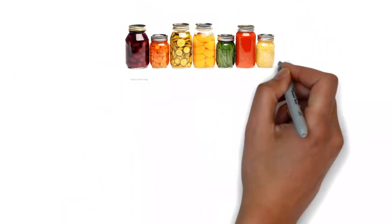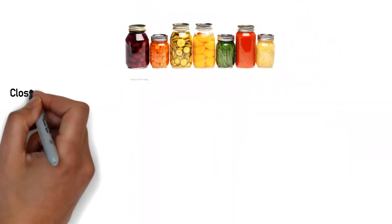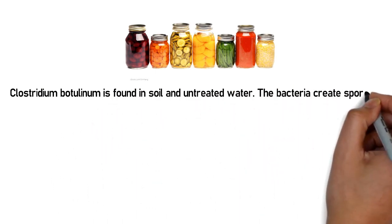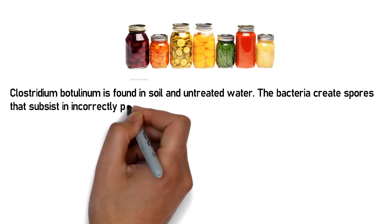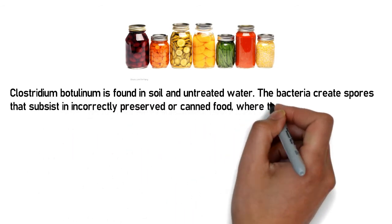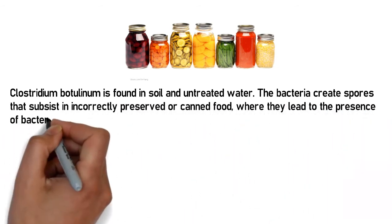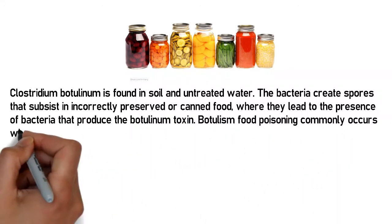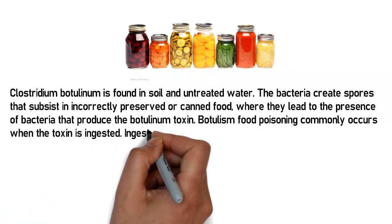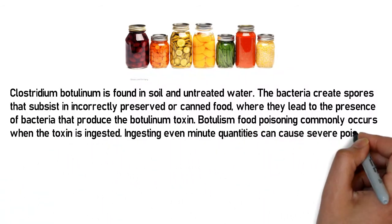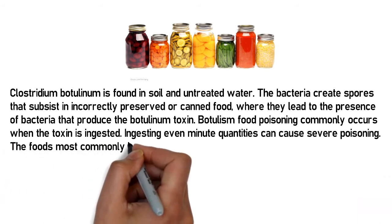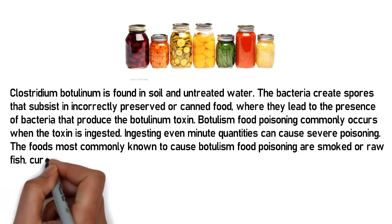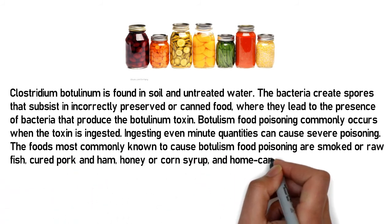What causes botulism food poisoning? Clostridium botulinum is found in soil and untreated water. The bacteria create spores that subsist in incorrectly preserved or canned food, where they lead to the presence of bacteria that produce the botulinum toxin. Botulism food poisoning commonly occurs when the toxin is ingested — even minute quantities can cause severe poisoning. The foods most commonly known to cause it are smoked or raw fish, cured pork and ham, honey or corn syrup, and home canned vegetables.